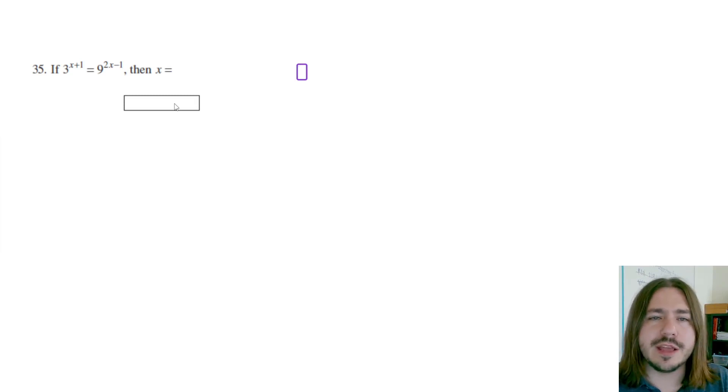Now to be able to answer this, you really have to be good with your exponent rules. And as they come up, I'll make sure to make a note of them. But let me start by just re-typing this equation out. You've got 3 to the power of x plus 1 equals 9 to the power of 2x minus 1.